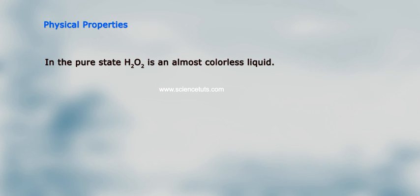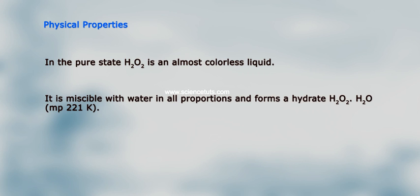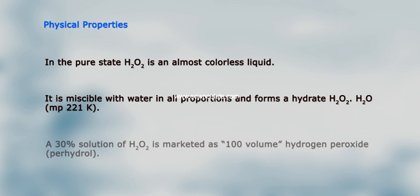Regarding physical properties, in the pure state H₂O₂ is an almost colorless liquid. It is miscible with water in all proportions and forms a hydrate H₂O₂·H₂O with a melting point of 221 K. A 30% solution of H₂O₂ is marketed as 100-volume hydrogen peroxide.